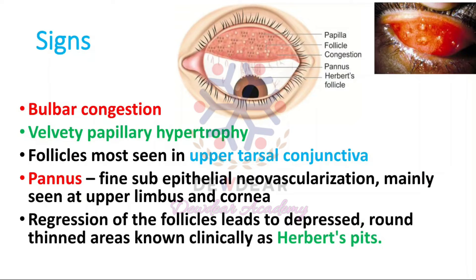Herbert pits are another important sign. These follicles may regress, leading to depressed, round, thin areas known as Herbert pits — essentially scar formation caused by the regression of follicles. Herbert pits are described as follicle-like infiltrations seen near the limbus. So the signs of trachoma are: bulbar congestion, velvety papillary hypertrophy, follicles in the upper tarsal conjunctiva, pannus, and Herbert pits.